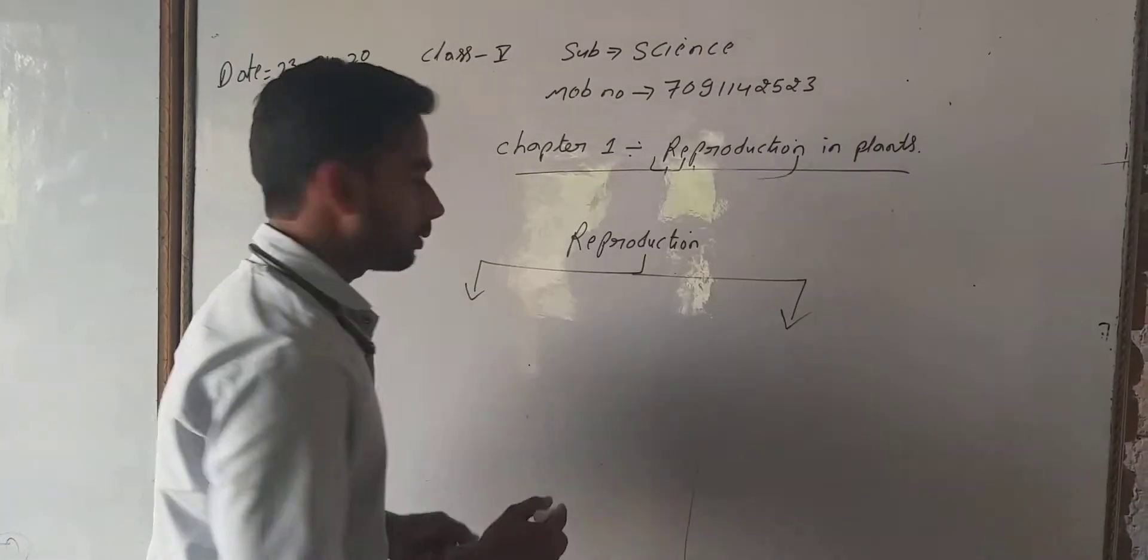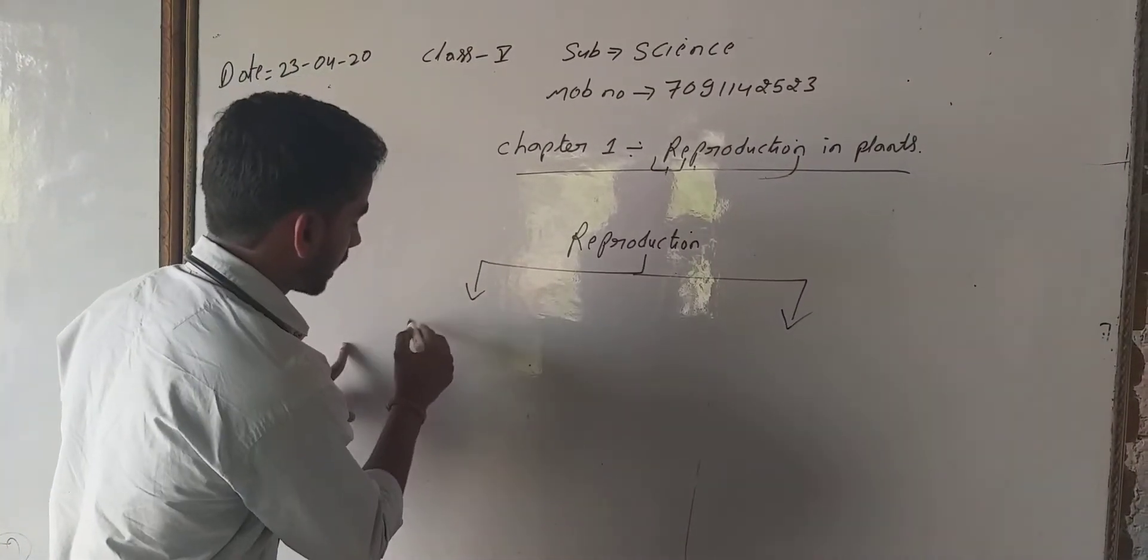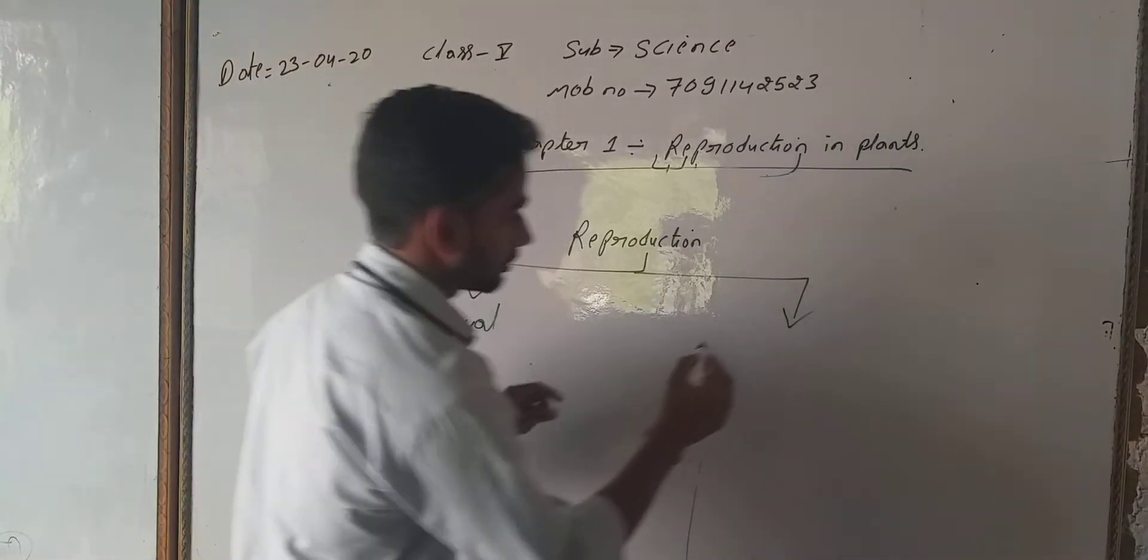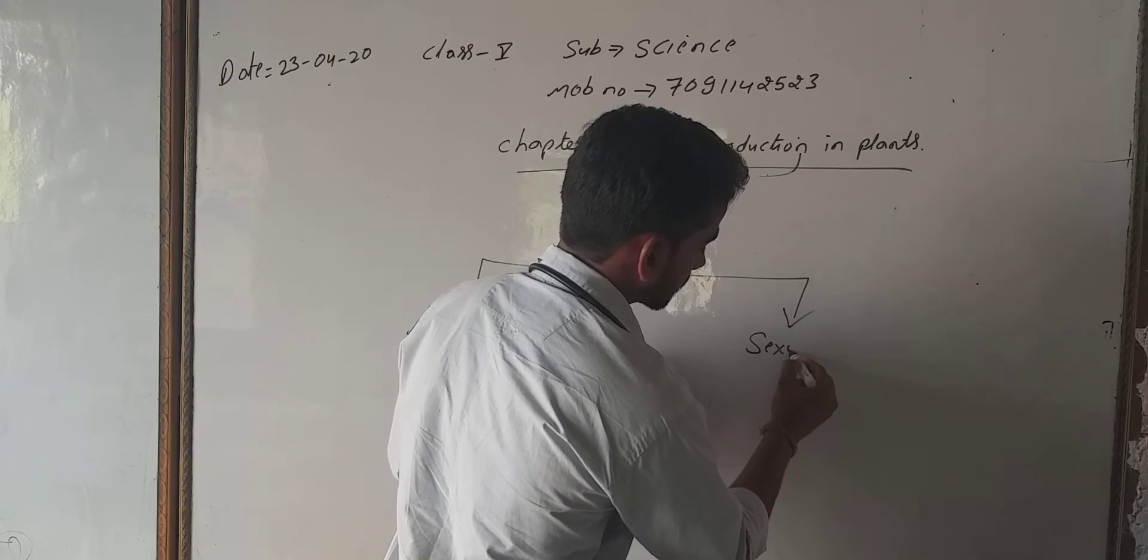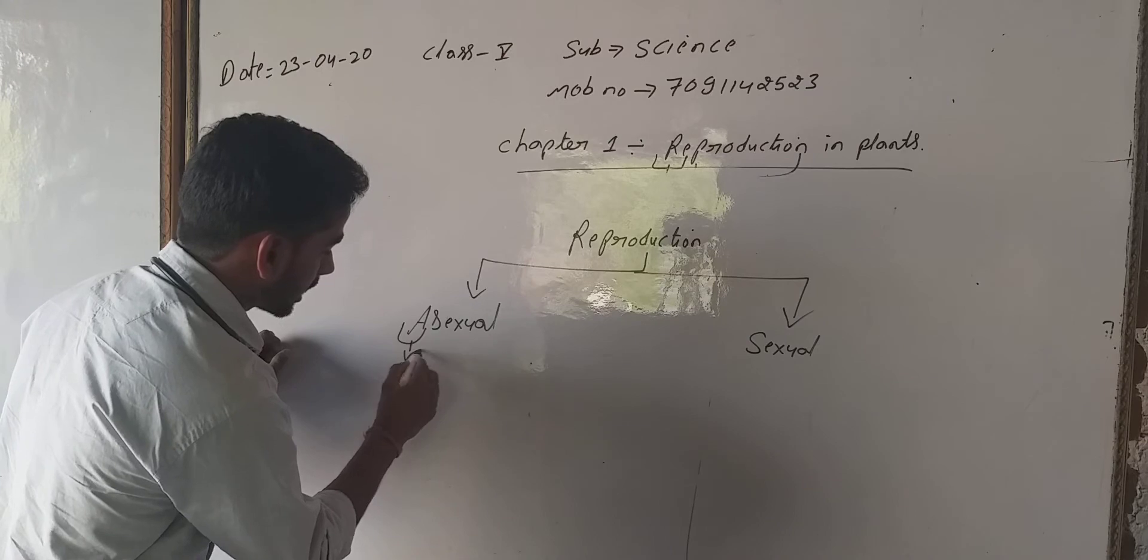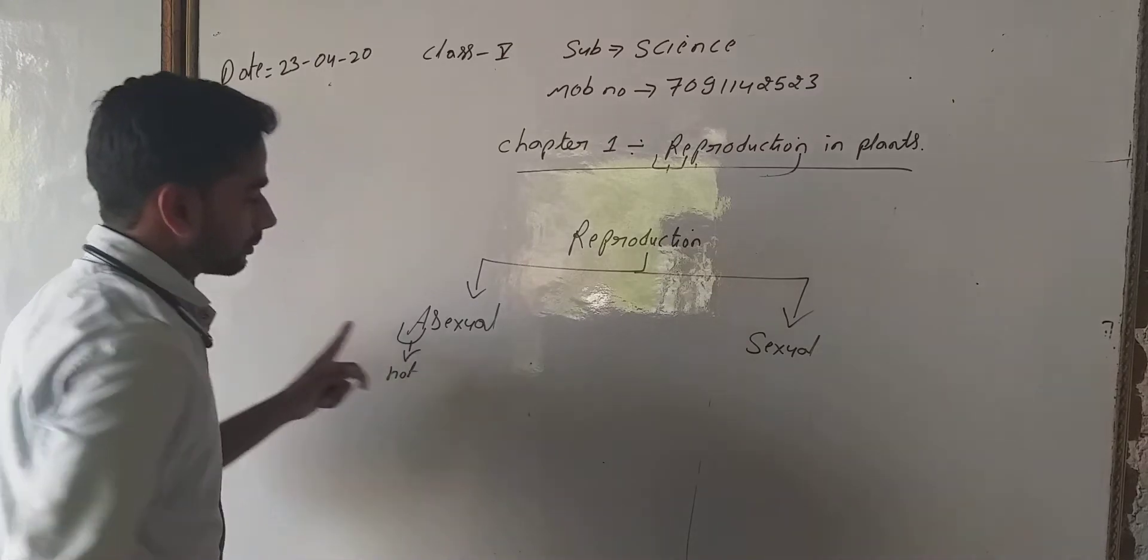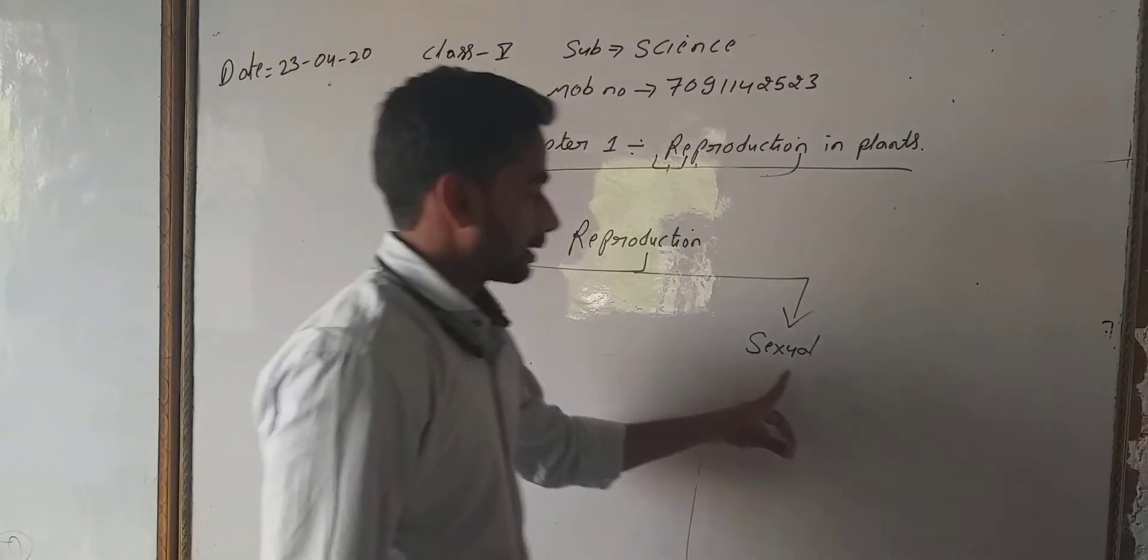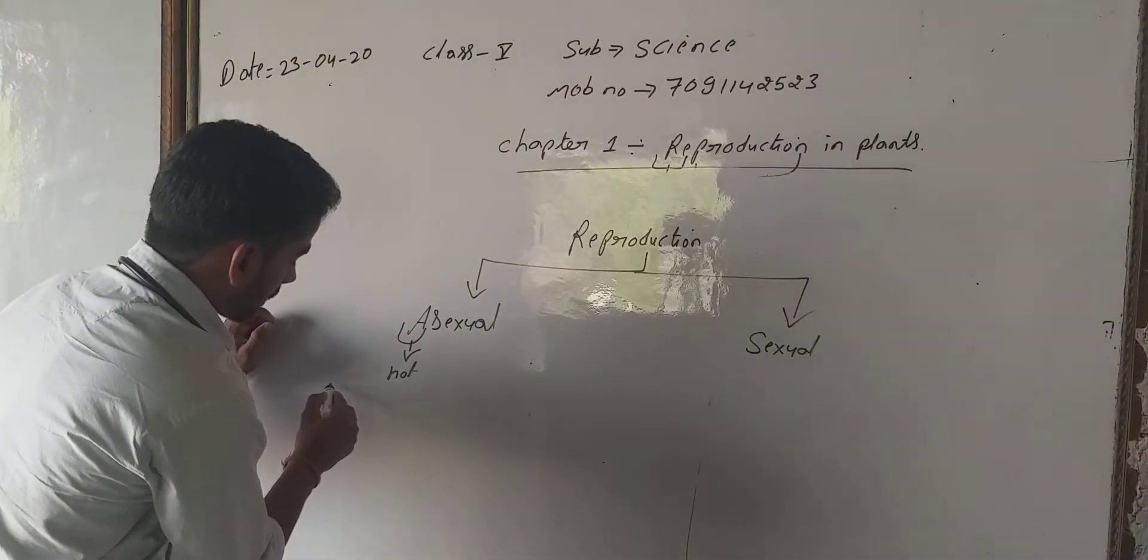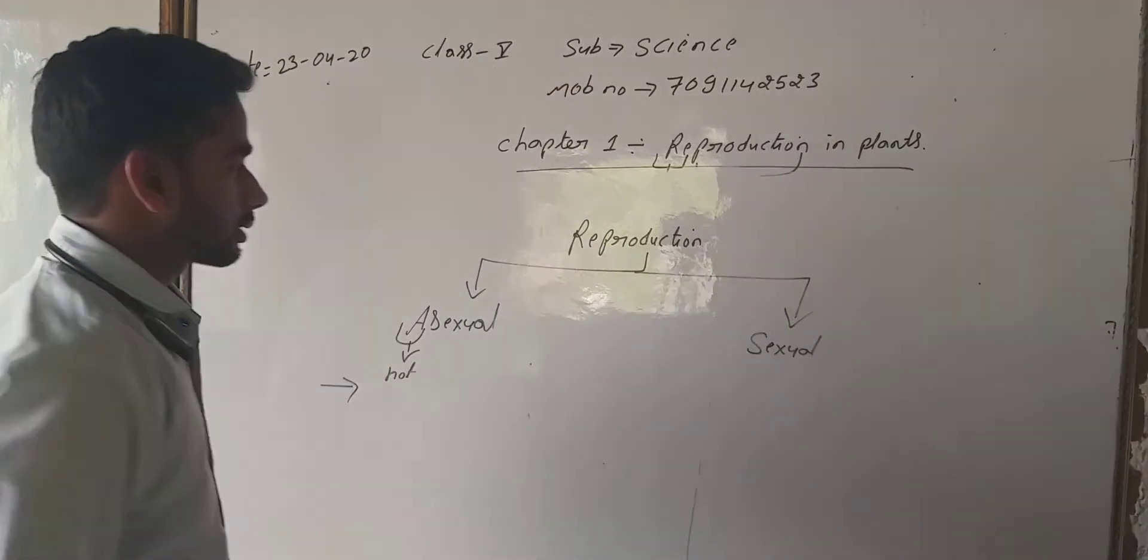Reproduction is mainly of two types: first is asexual reproduction, and second is sexual reproduction. In biological terms, 'a' stands for 'not,' meaning not sexual, while sexual means it's sexual.